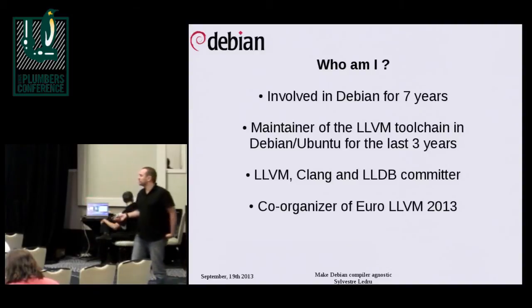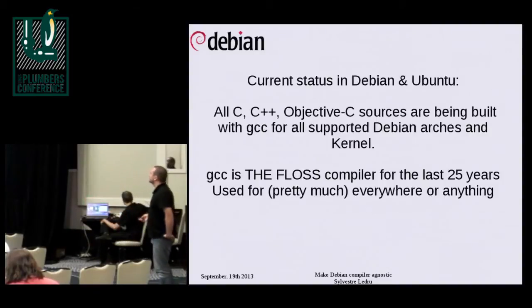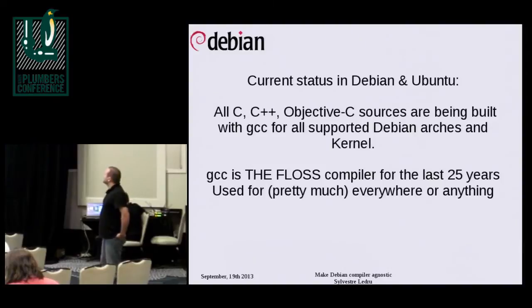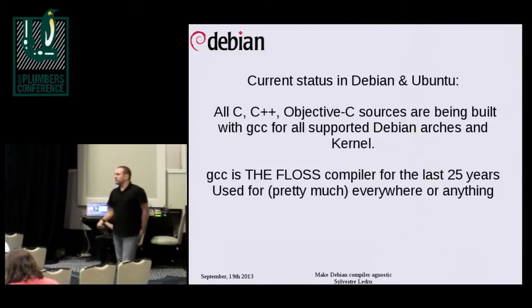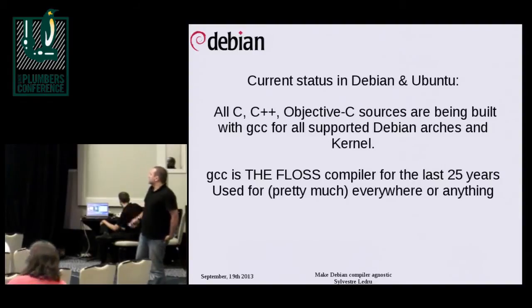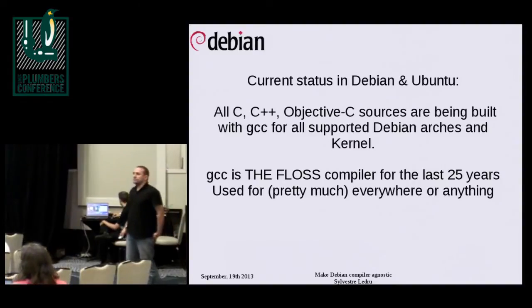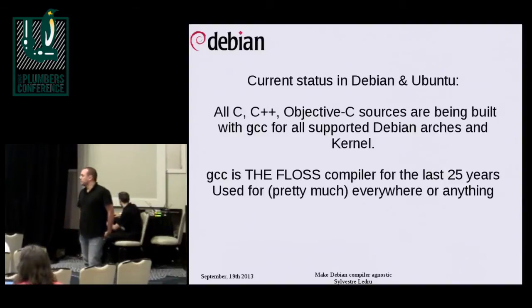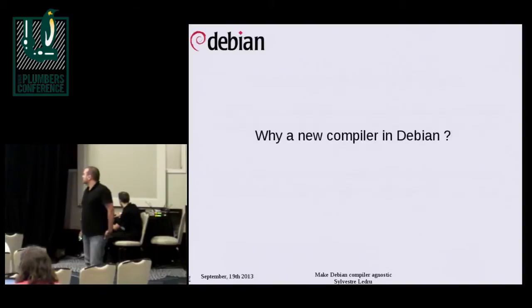I won't explain what Debian is — I guess you all know. Currently in Debian and Ubuntu, we are using GCC for everything: every package, every architecture, and every kernel. GCC has been the default compiler for the last 25 years and we are using it for basically HPC to embedded devices.